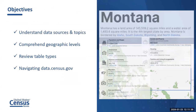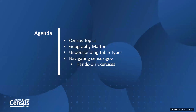Today our objective will be to understand the data sources and topics that are available. We'll go over a little bit of geography and the different geographic levels. We will review table types so you can understand what you're looking at when navigating on data.census.gov, and then we'll use three case examples. Our agenda will start with topics available on the Census website, then geography matters, table type understanding, and navigating data.census.gov.